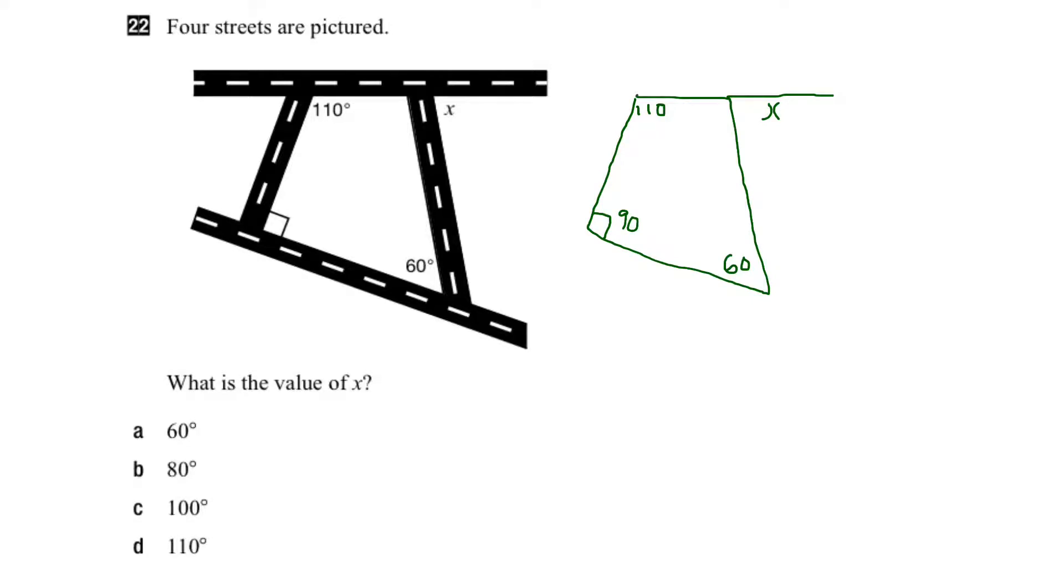One of the things we might recall is that the sum of the interior angles of a quadrilateral add up to 360 degrees. So if I call these angles A, B, C, D, then A plus B plus C plus D should add up to 360 degrees.